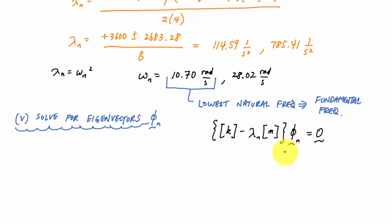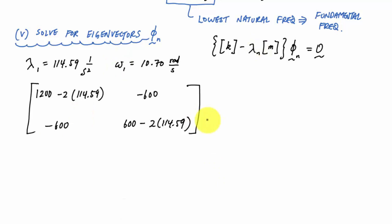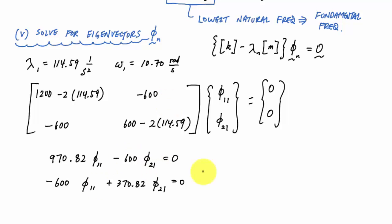This is my k minus lambda m matrix, and my eigenvector or mode shape is phi for location one mode one, location two mode one, which equals zero and zero. When I expand this, I have two dependent equations, so I just need to use one and I have to set a value to one of the eigenvector values.